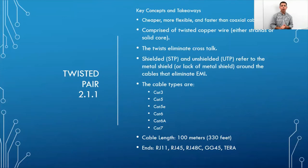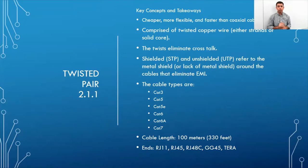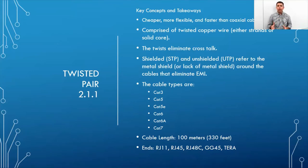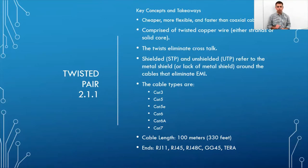There is shielded twisted pair (STP) and unshielded twisted pair (UTP). The metal shield around the wires in STP helps eliminate or absorb EMI from outside sources so you don't get signal interruptions.